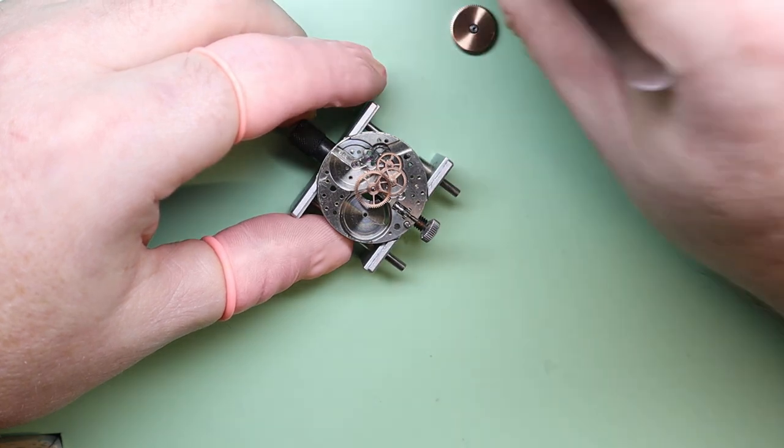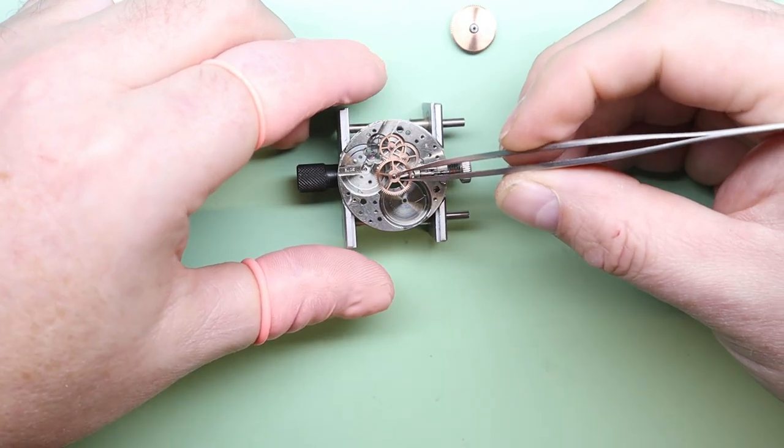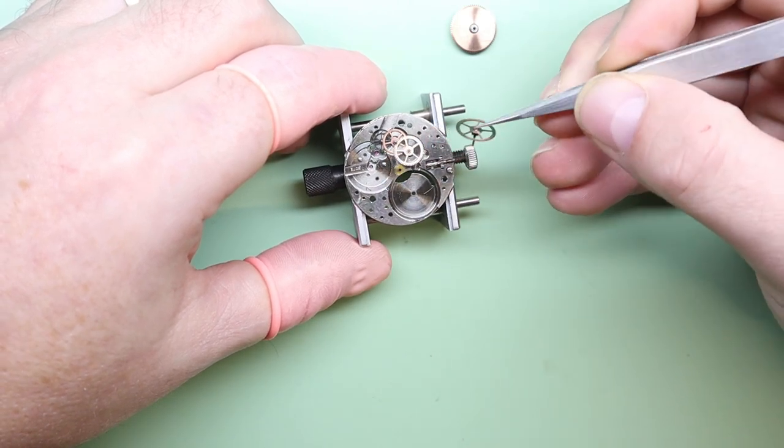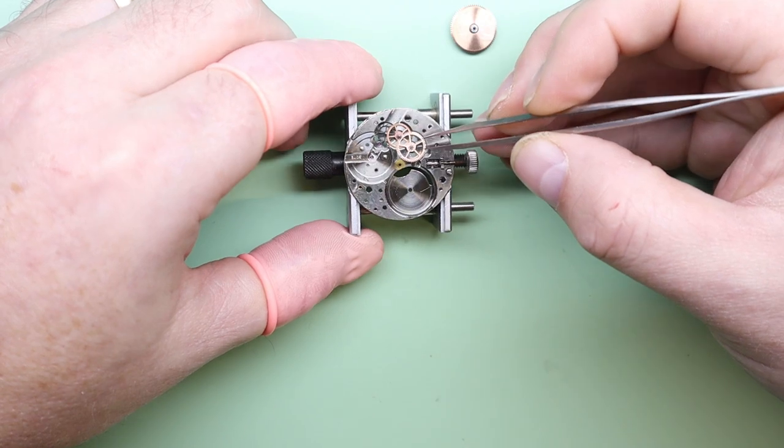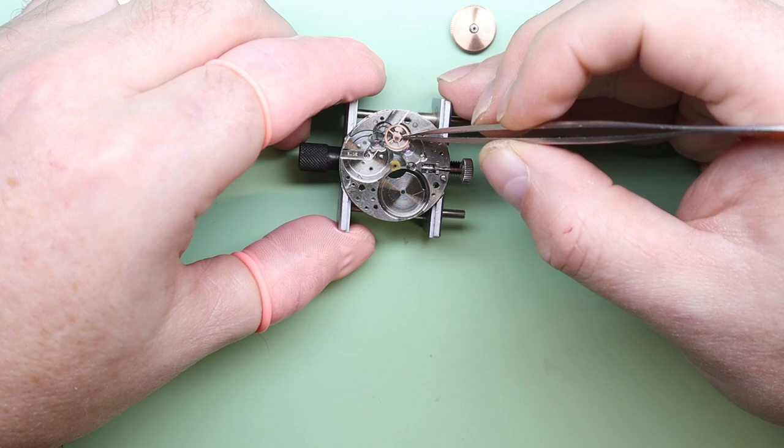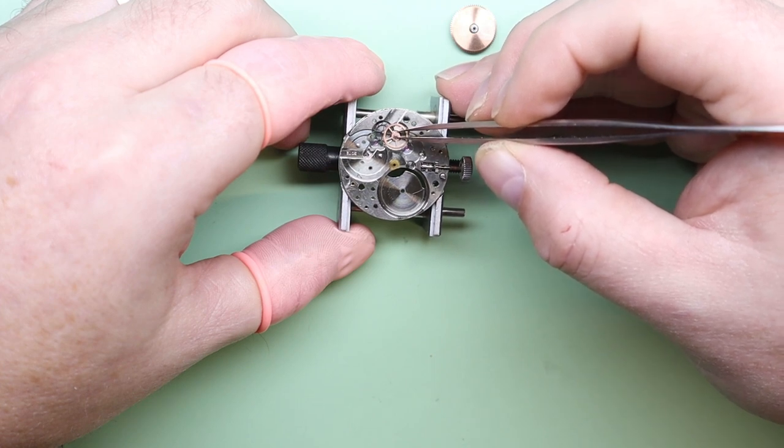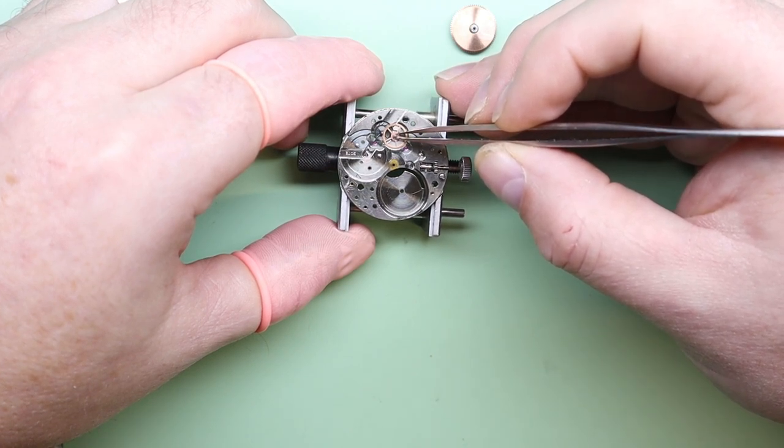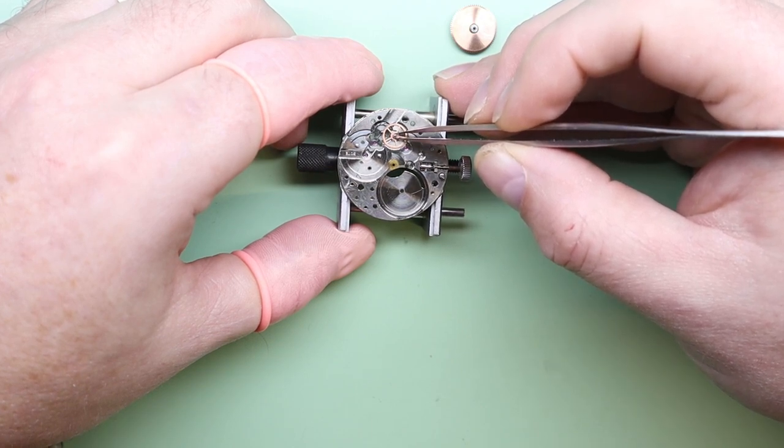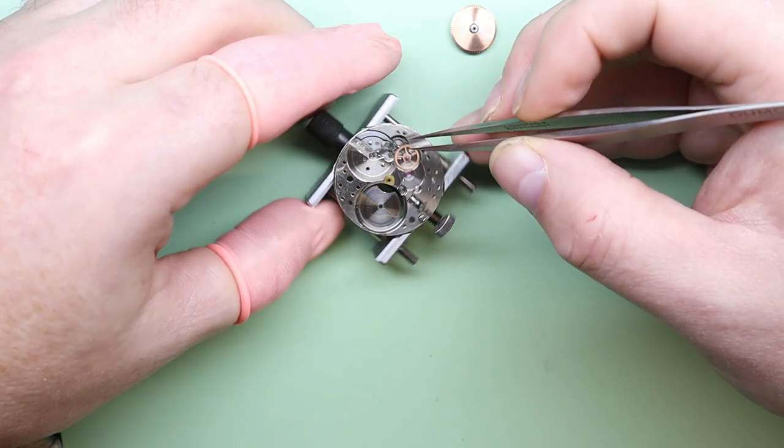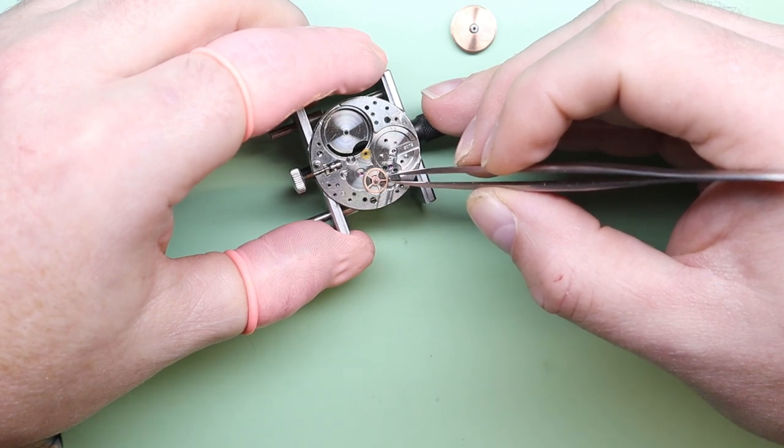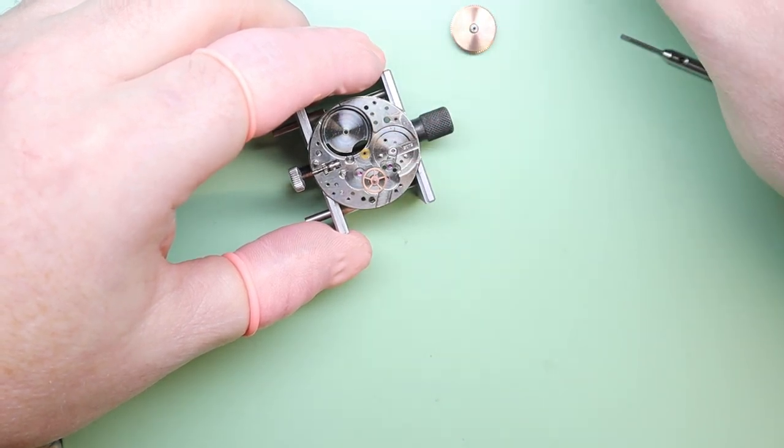We'll start with the center wheel, we'll go on to the third wheel, and it looks like the fourth wheel is actually stuck a little with old oil keeping that wheel in place. Don't want to force it again. A little later on, out of shot, I actually add a little bit of lubrication to that wheel so it comes out more easily. We'll move on to the escape wheel and get that out of the way in the meantime.